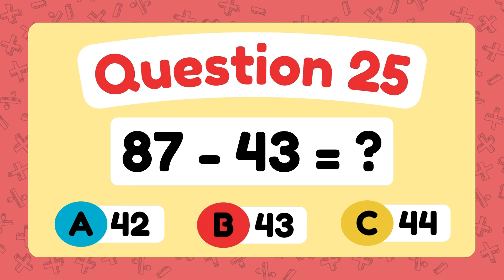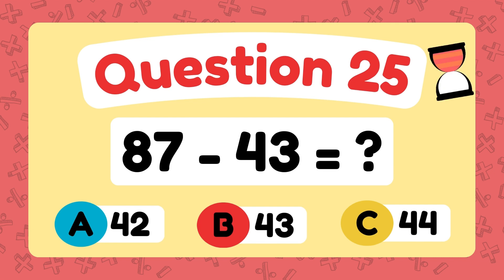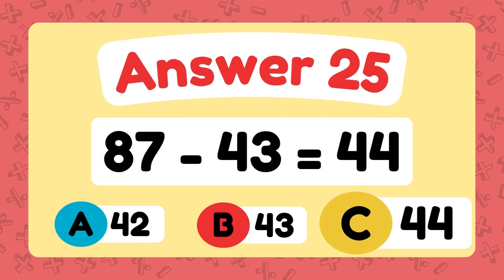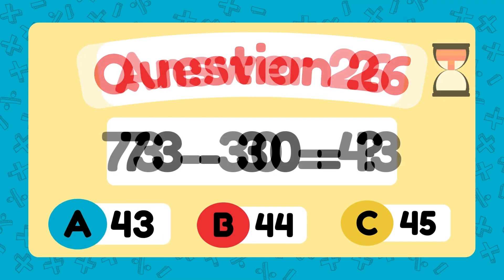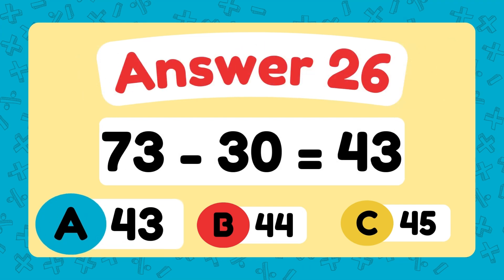What is 87 minus 43? The answer is 44. What is 73 minus 30? The answer is 43.